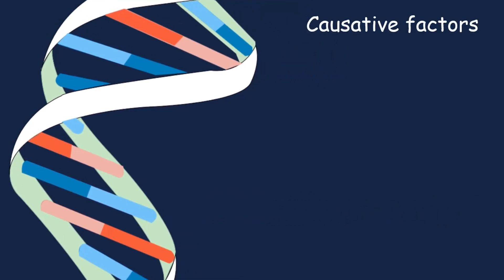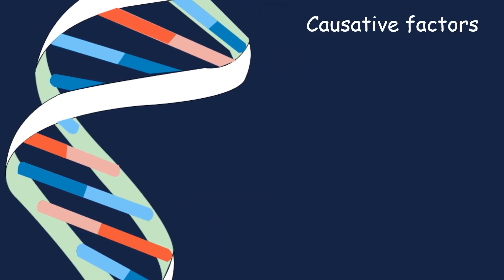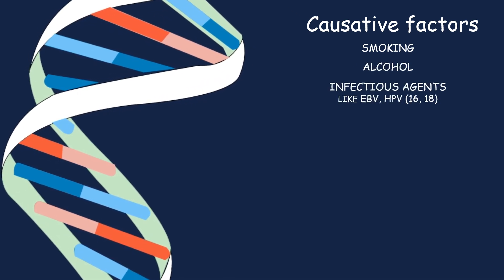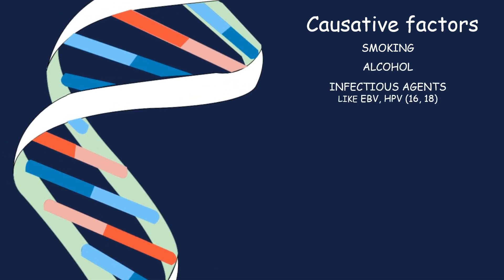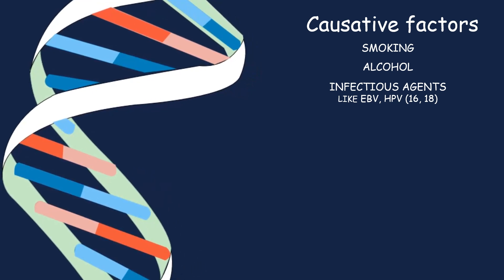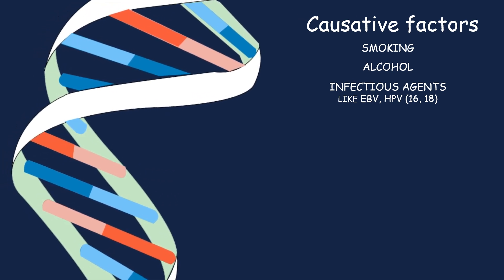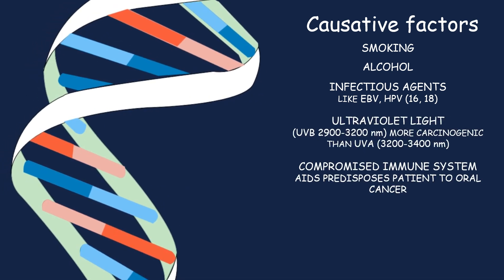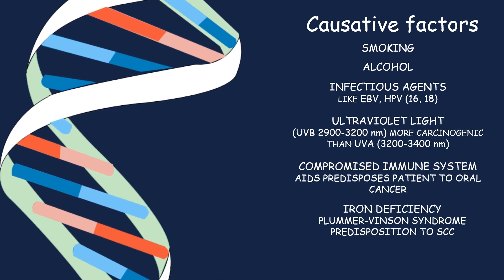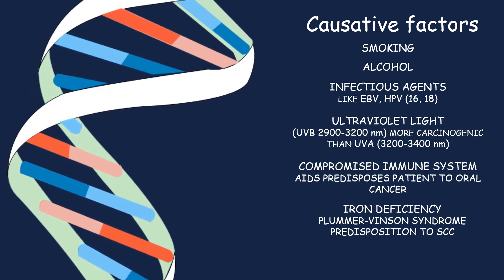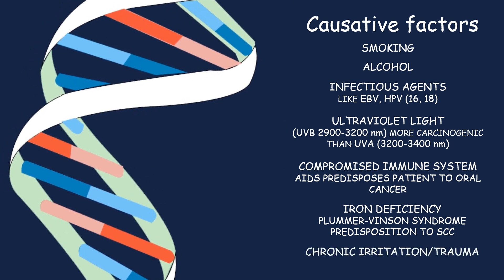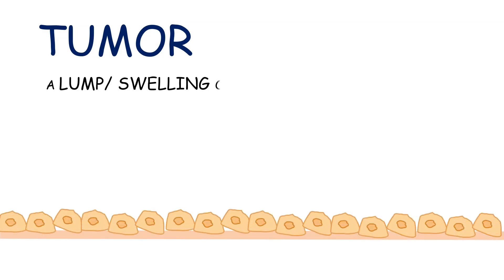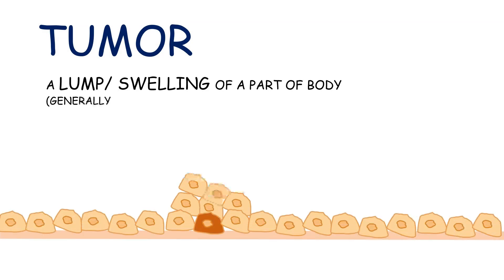Causes of genetic mutation may include smoking, alcohol consumption, infectious agents or oncogenic viruses like Epstein-Barr virus and human papilloma virus strains 16 and 18, radiation exposure, immunosuppression, nutritional deficiencies like vitamin A and iron deficiency, and lastly chronic irritation from trauma.